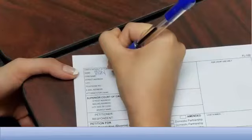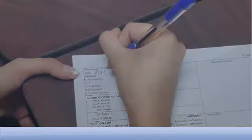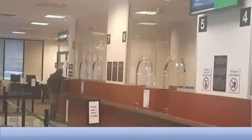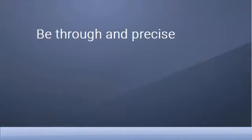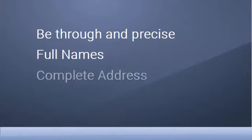If you prefer to handwrite your forms, you can download and print them from the provided links or pick up a packet at the self-help center at the court. If writing by hand, please use dark blue or black ink and print clearly. Be as thorough and precise as possible, use full legal names each and every time, make sure your address is complete with apartment number and zip code, and include area codes in all telephone numbers.